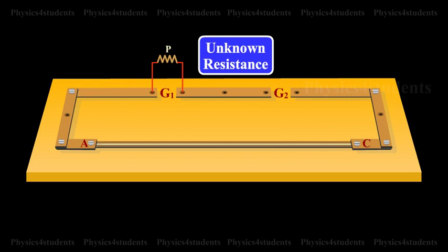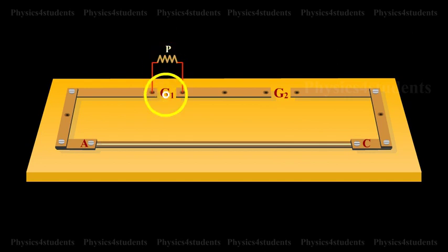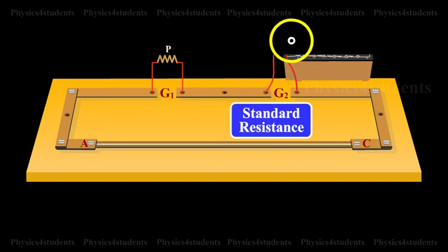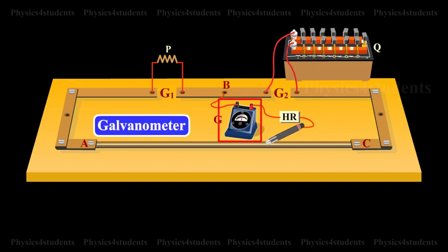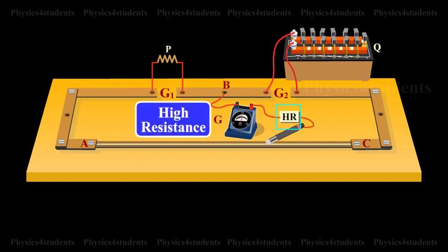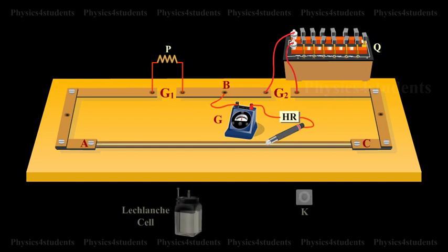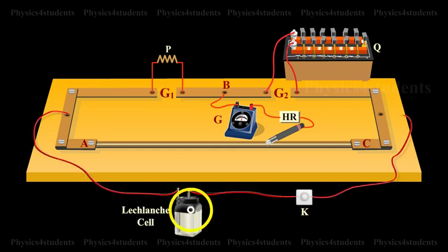An unknown resistance P is connected in gap G1 and a standard resistance Q is connected in gap G2. A metal jockey J is connected to B through a galvanometer G and a high resistance HR, and it can make contact at any point on wire AC. Across the two ends of the wire, a Leclanche cell and a key are connected.